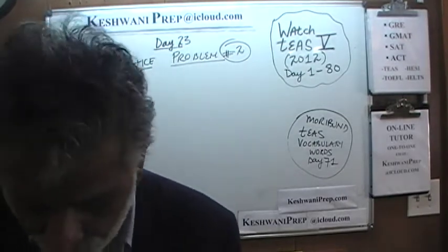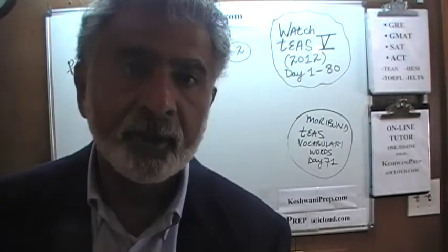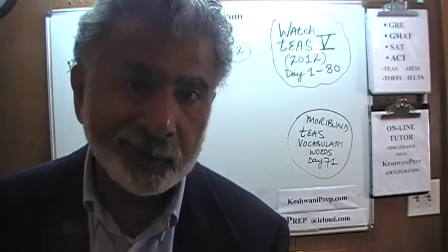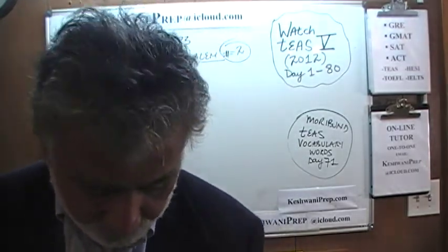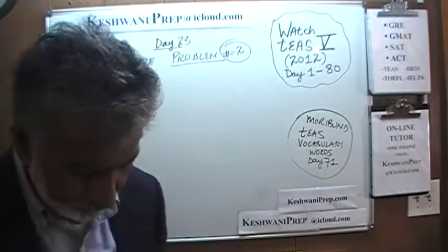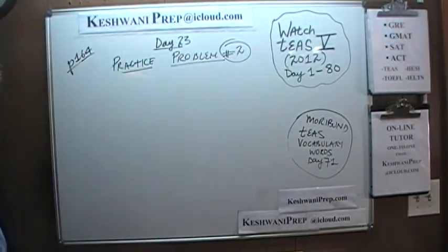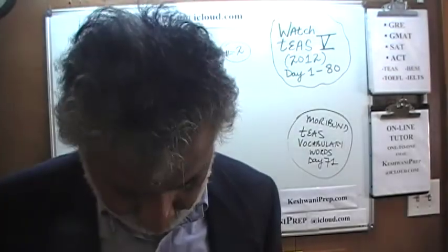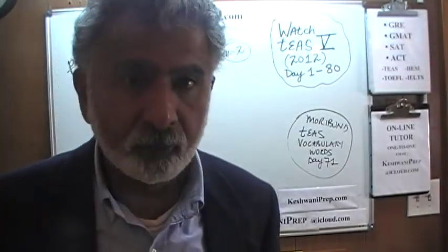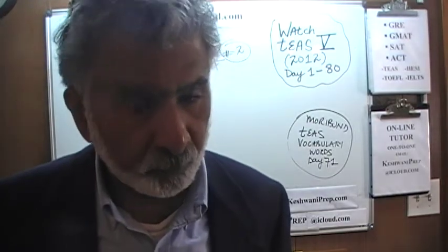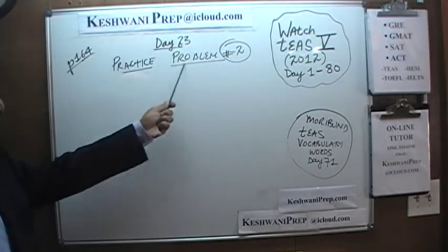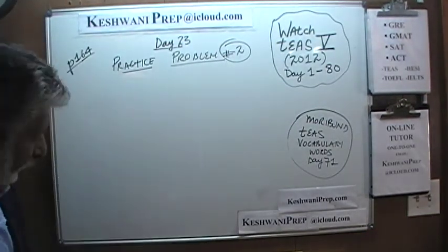Today we will continue the topic we have been on for the last three days, having to do with rounding and estimation. Yesterday we did the four practice problems on page 164 — problems one, three, four, and five. We skipped problem number two. Problem number two is what we are going to do today. Just one problem, it has several parts to it. Practice problem number two on page 164. Please turn to it.